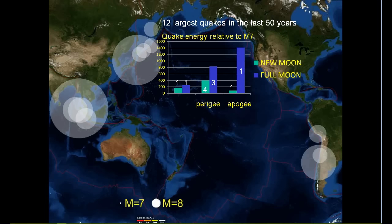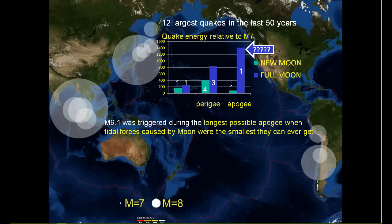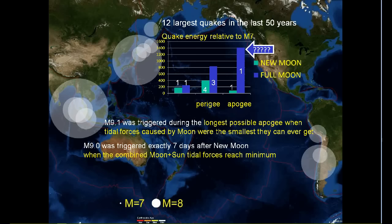The largest single earthquake on this graph occurred during Apogee, when Moon was at the maximum distance away from Earth. It is difficult to disregard this earthquake, because its energy was larger than the energy of all other earthquakes on this graph combined. The other strange thing is that the second largest earthquake in the last 50 years is missing, because it was triggered seven days after New Moon. A closer inspection reveals that magnitude 9.1 earthquake was triggered during the longest possible Apogee, when tidal forces caused by the Moon were the smallest they can ever get. Magnitude 9.0 earthquake was triggered exactly seven days after New Moon, when the combined lunar and solar tidal forces reached their minimum.